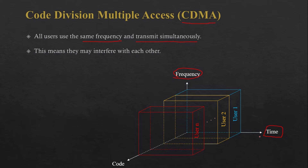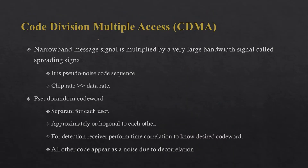That unique code will allow the base station to differentiate among the users. This is the basic definition of CDMA, in which users use the same time and frequency but different codes. However, if users share the same time and frequency it may introduce interference, because the same frequency means it will be a co-channel situation, and co-channel can introduce co-channel interference.